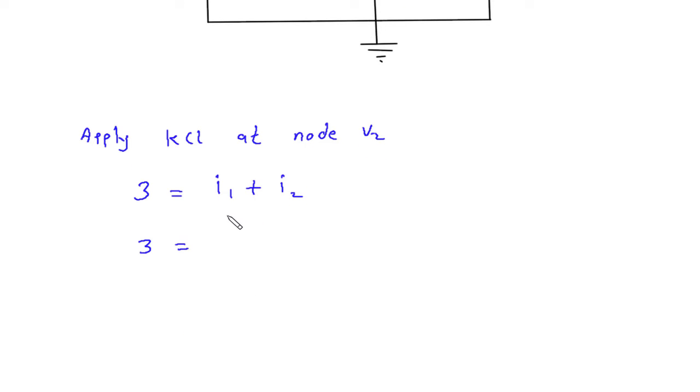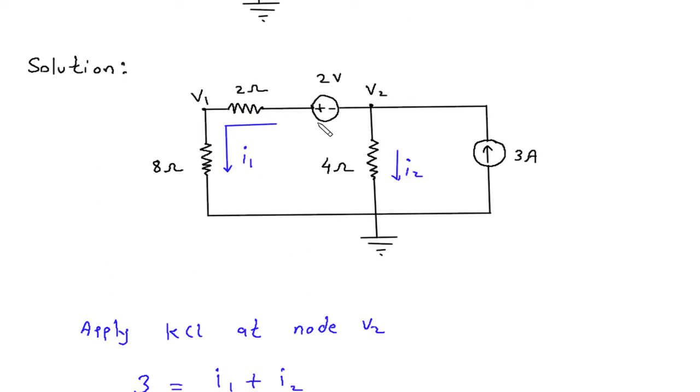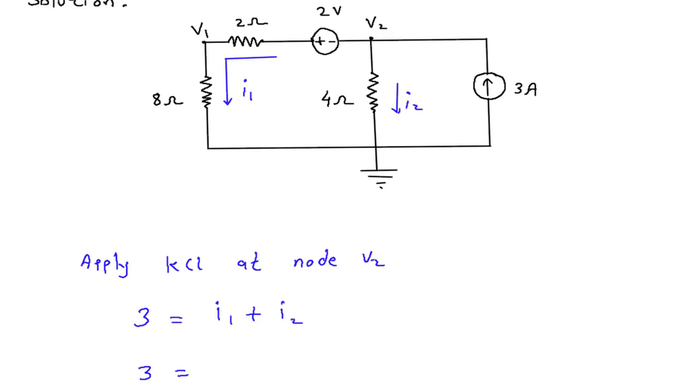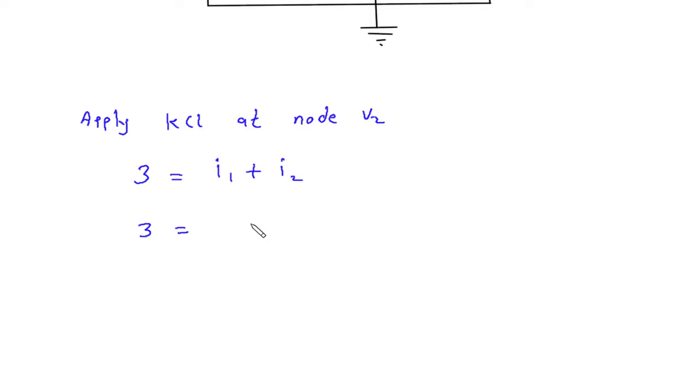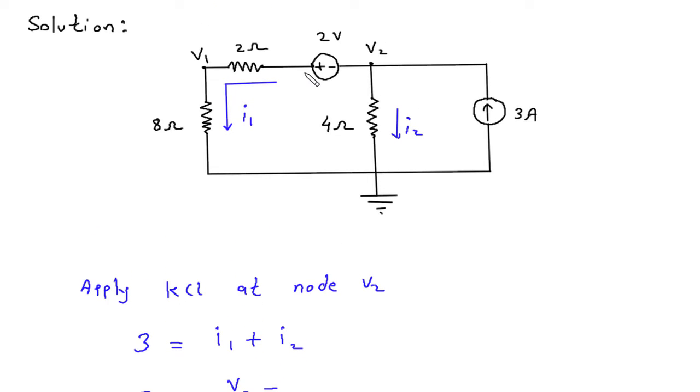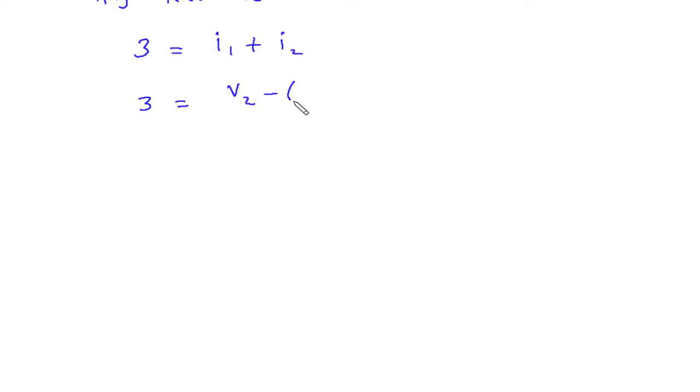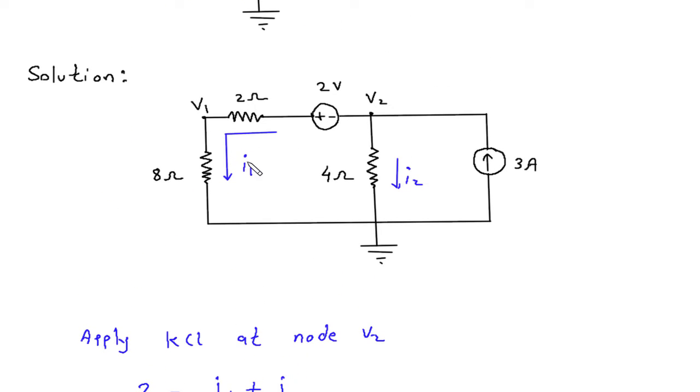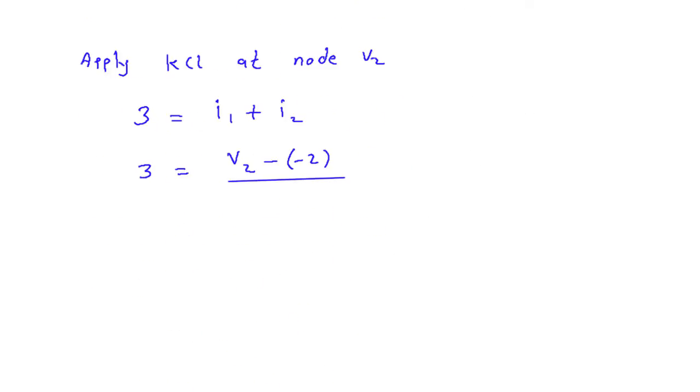3 is equal to I1. I1 is V2 minus minus, because this is positive and this is negative. So this will be V2 minus minus 2, by 8 plus 2 is 10 ohm.